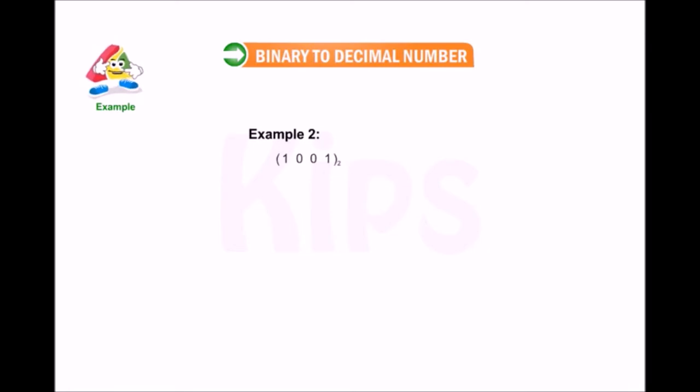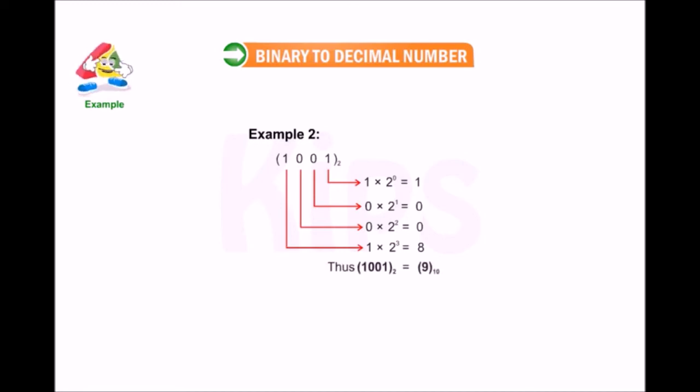From the units place we get 1, from the tens place we get 0, from the hundreds place we get another 0, and from the thousands place we get 8. 1 + 8 = 9, thus 1001 in binary can be written as 9 in decimal.